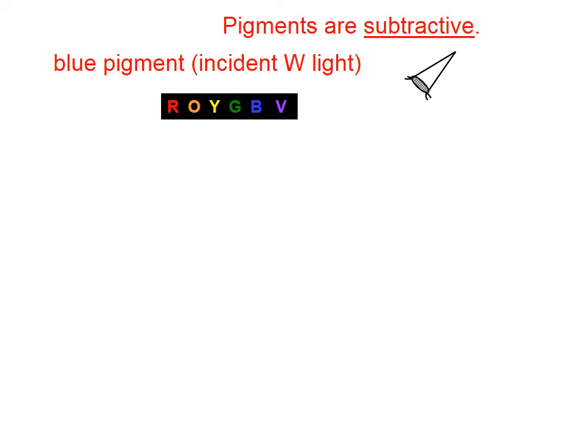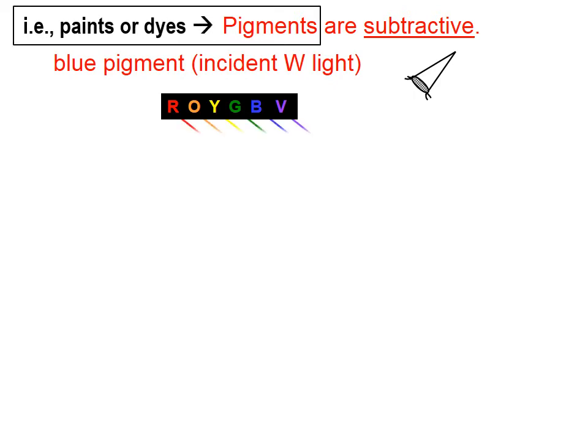Pigments are subtractive. And when we talk pigments, we're referring to paints or dyes. Pigments are different from light.